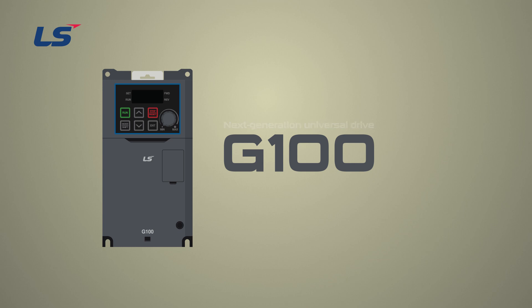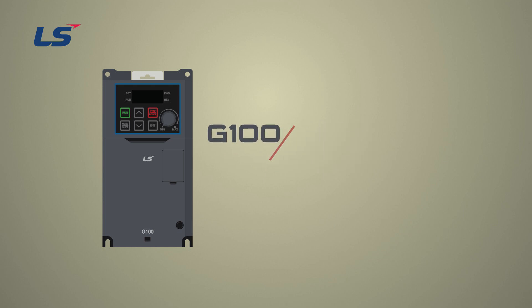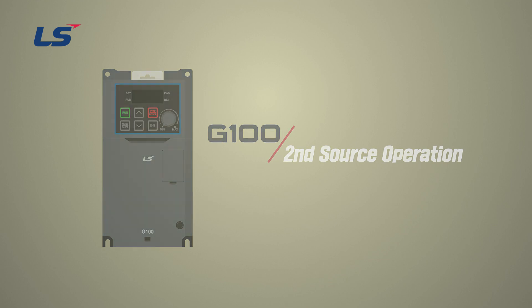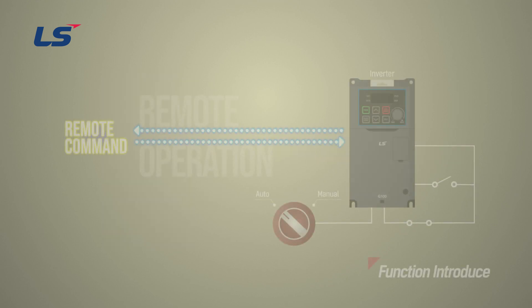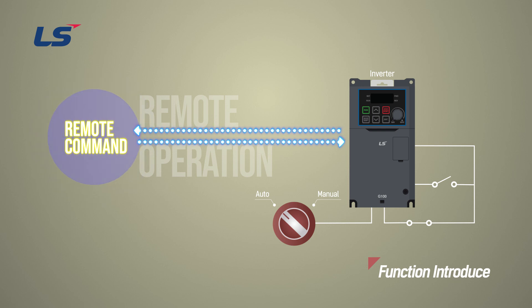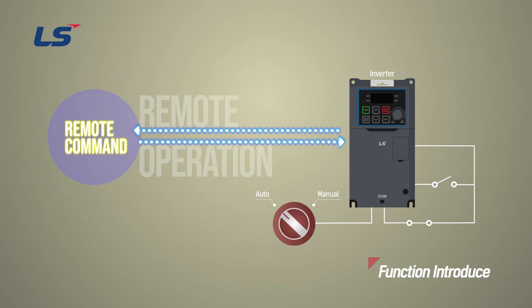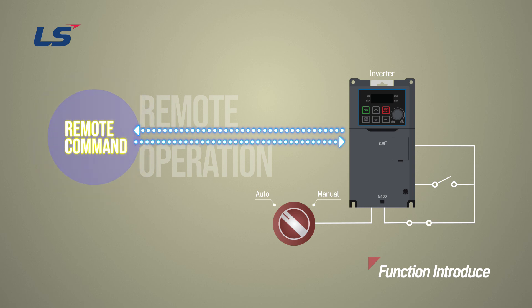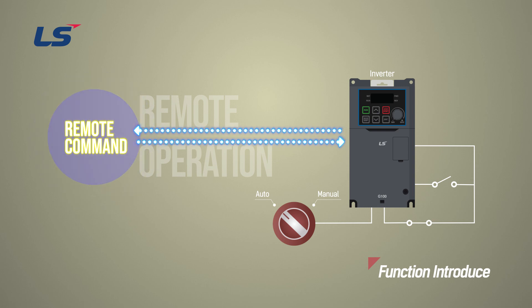In this video, we will learn about the function of the second operation mode on the G100. Second operation mode allows two different operation modes and allows the user to switch between them as required using the multi-function input terminal.